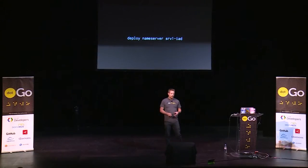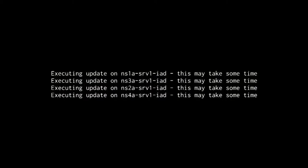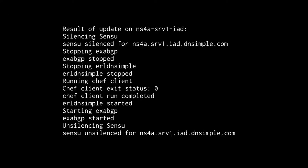Here's an example of the workflow. In the bot I say 'deploy name server SRV1 in IAD' — that's an entire side of a cluster, in this case four nodes. I get back a response: Hubot says it's executing. That was actually four separate HTTP calls, one to each of those nodes, and the Go stuff is now running on each system.